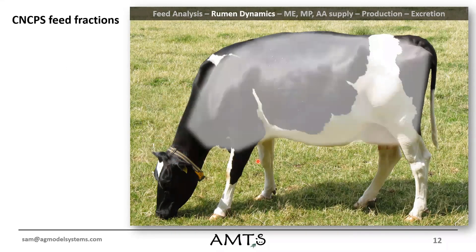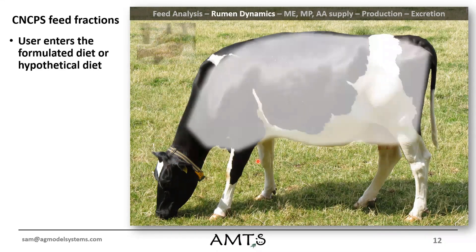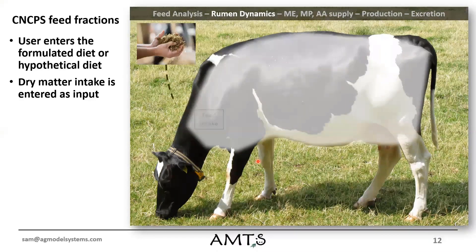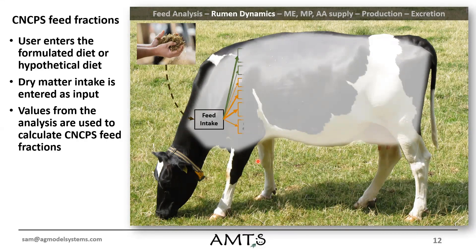Once we have those feed fractions, this is kind of what we're trying to visualize with the model. The animal has a certain amount of feed intake that we input into the program. And based on that feed analysis, we can split up the feed profile into feed proteins, feed ammonia, sugars, starch, digestible fiber, and indigestible fiber. At this point, we're really pushing more for UNDF to be the measure for indigestible fiber.